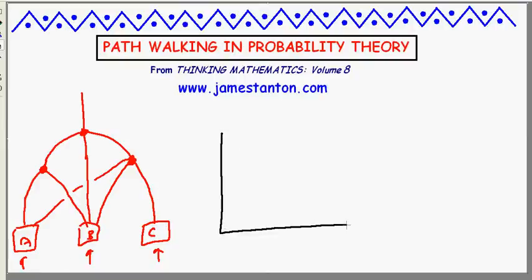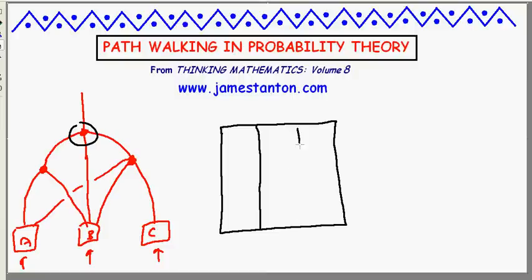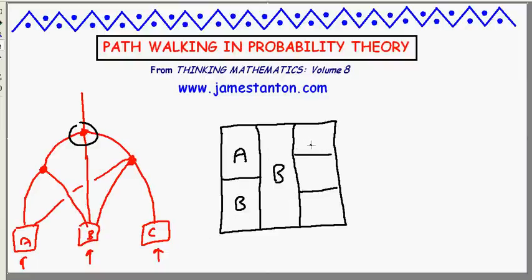Let's use the square model. Here's a big block representing all the people. At the first split, a third go to the left, a third go straight, and a third go to the right. The middle third all go straight to house B. The people on the left split in two: half end up in A and half in B. The people on the right split into three: one third go to A, one third to B, one third to C. So the number of people in house A is one half of one third, which is one sixth, plus one third of one third, which is one ninth.